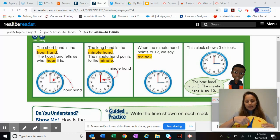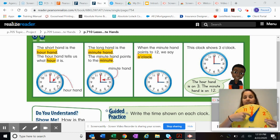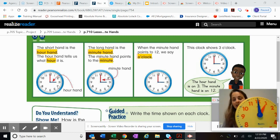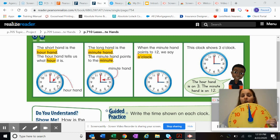So this blue hand is our minute hand, and this red hand is our hour hand. And when our blue hand is up at the 12, we say o'clock. So the clock I'm holding in my hand shows the hour hand at the 1 and the minute hand at the 12. And so this clock shows 1 o'clock.